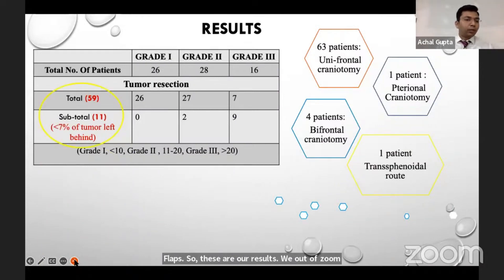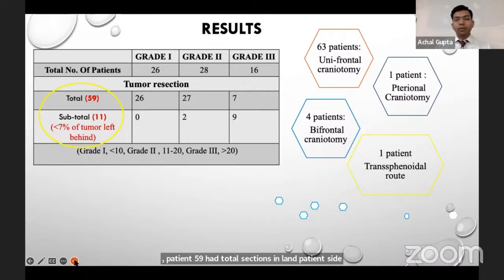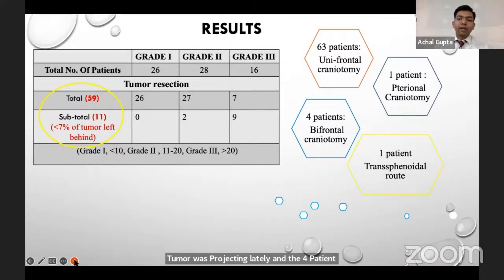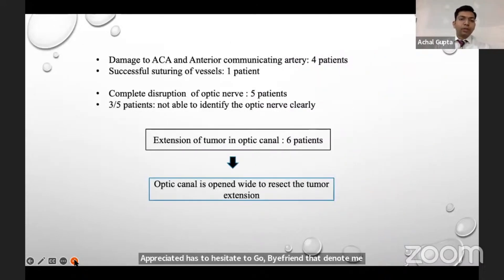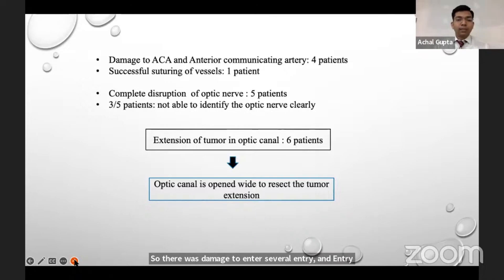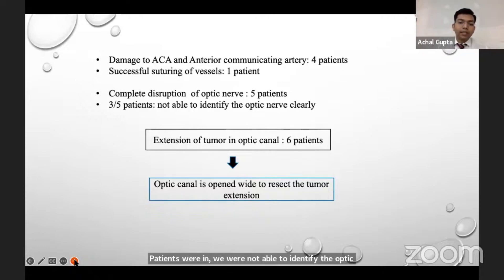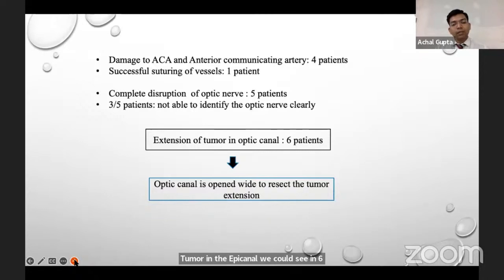Out of 70 tuberculum sellae meningioma patients, 59 had total resections and 11 had subtotal resections. 63 patients underwent unifrontal craniotomy subfrontal approach; one patient underwent pterional craniotomy as the tumor was projecting laterally; four patients had to undergo bifrontal craniotomy; and one patient required transfer to another group session. Damage to the anterior cerebral artery and anterior communicating artery occurred in four patients, with successful suturing of the vessel in one patient. Complete disruption of the optic nerve occurred in five patients — in three of these the optic nerve could not be clearly identified during surgery. Extension of the tumor into the optic canal was seen in six patients, and the optic canal was opened to resect the tumor slowly and gently.